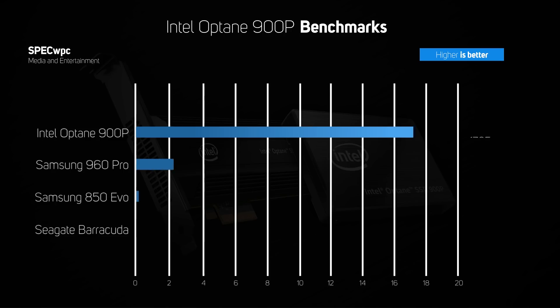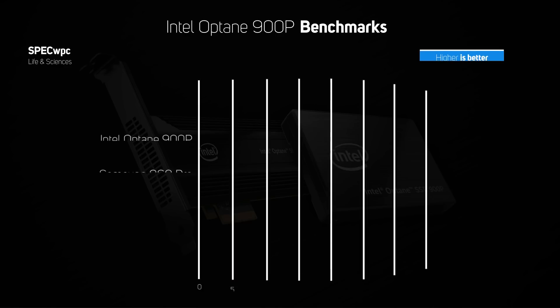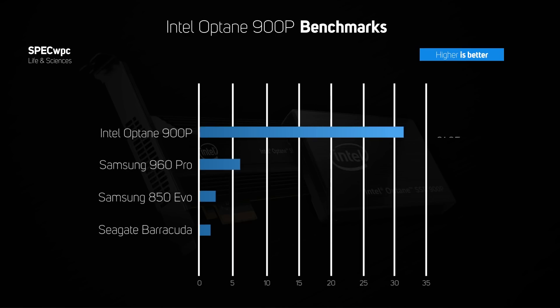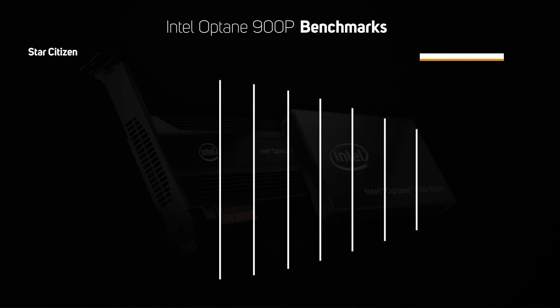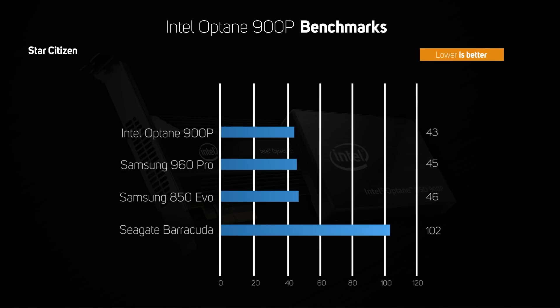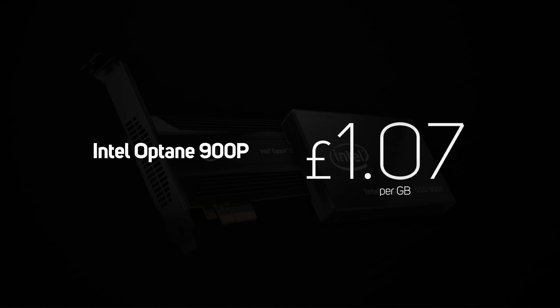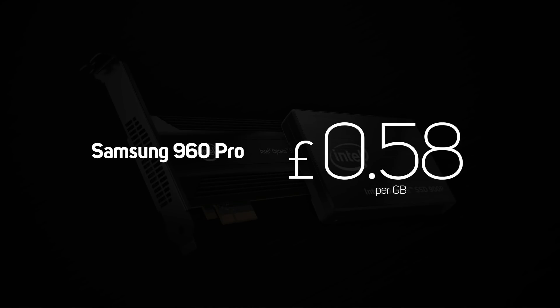Digging deeper, the SPEC WPC benchmarks gave the 900p a massive lead over the 960 Pro, showing that for workstation applications there really is a big difference in performance between the drives. On the other hand, the 900p was only marginally faster at loading games than the 960 Pro. At the time of making this video, the 900p will set you back £1.12 per gigabyte, whereas the 960 Pro costs 58p per gigabyte.